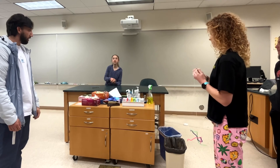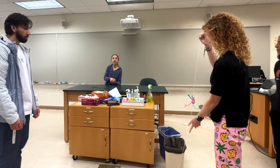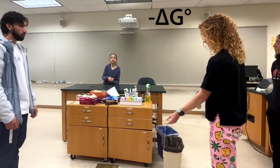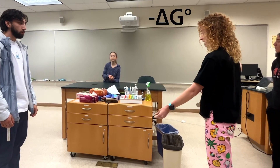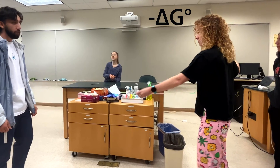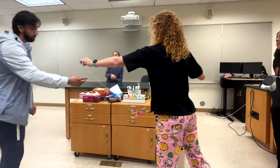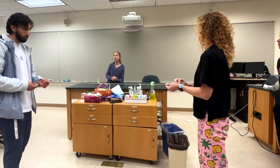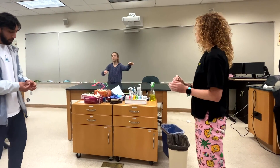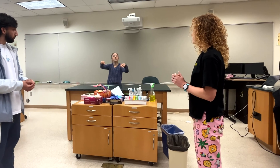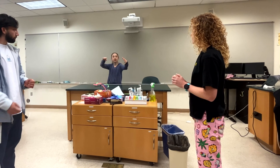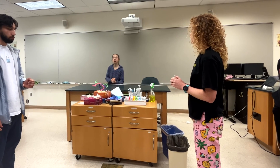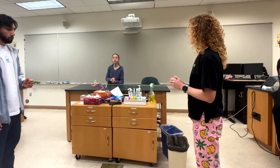And so if our products are more stable, what does that say about our delta G? Delta G is going to be negative. If we let things go to equilibrium, instead of having one to one, we would have more of the products than we would have of the reactants.